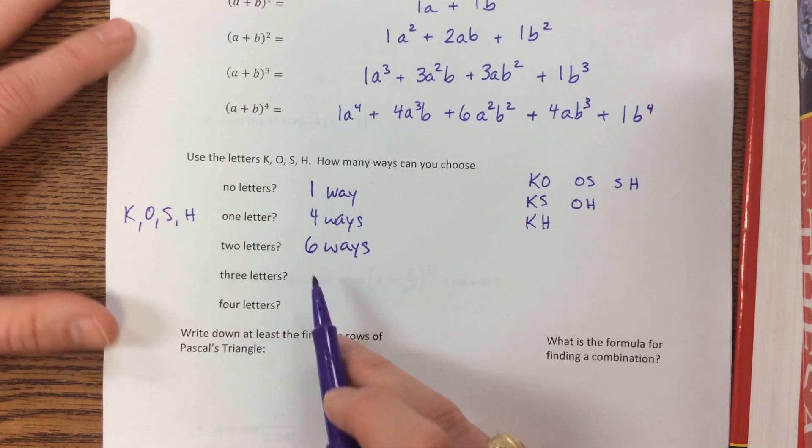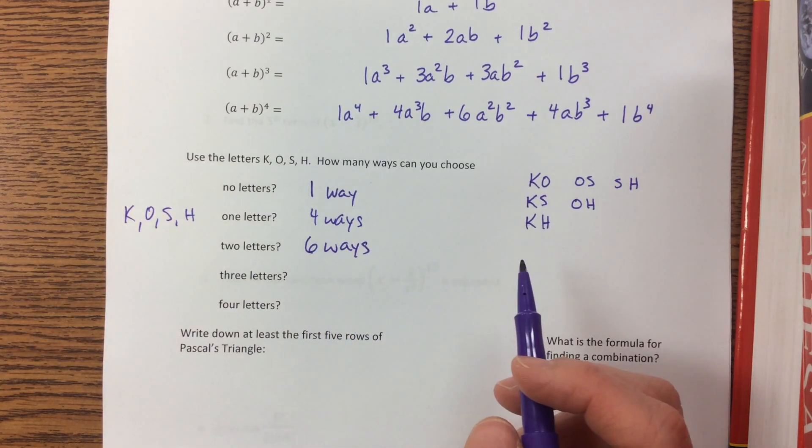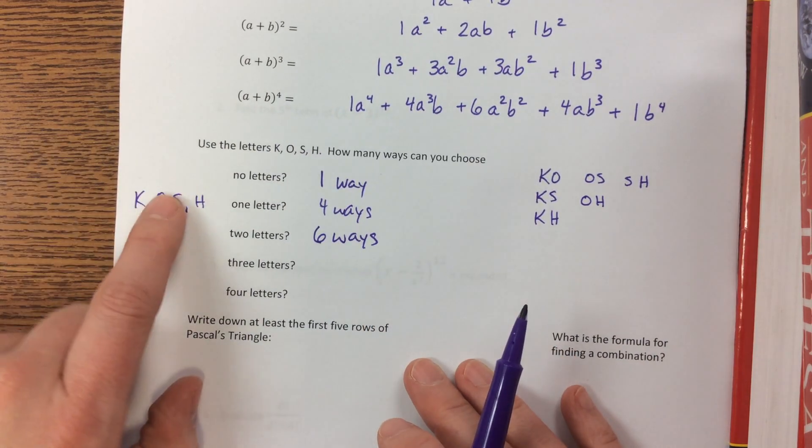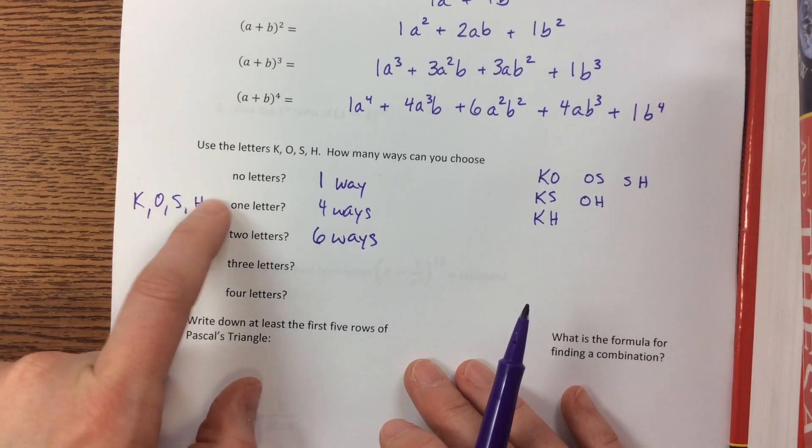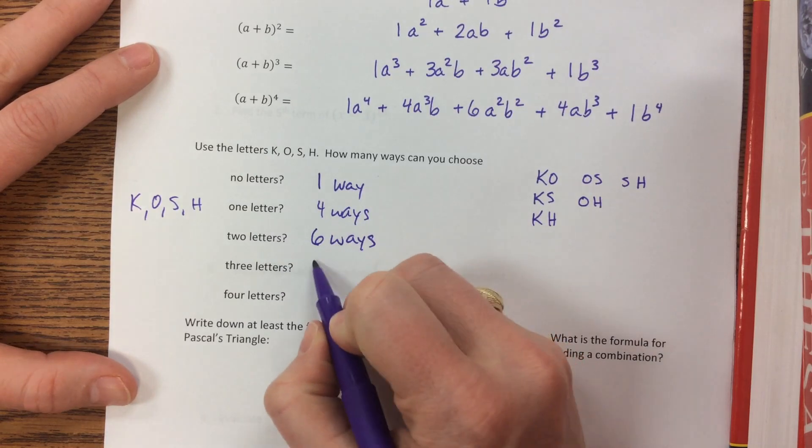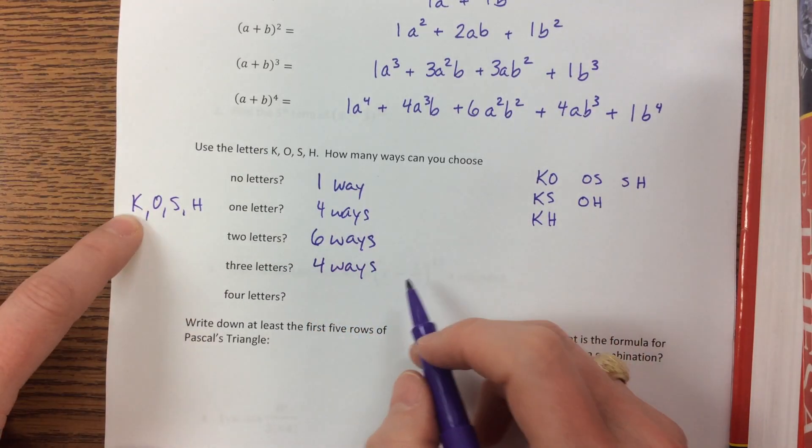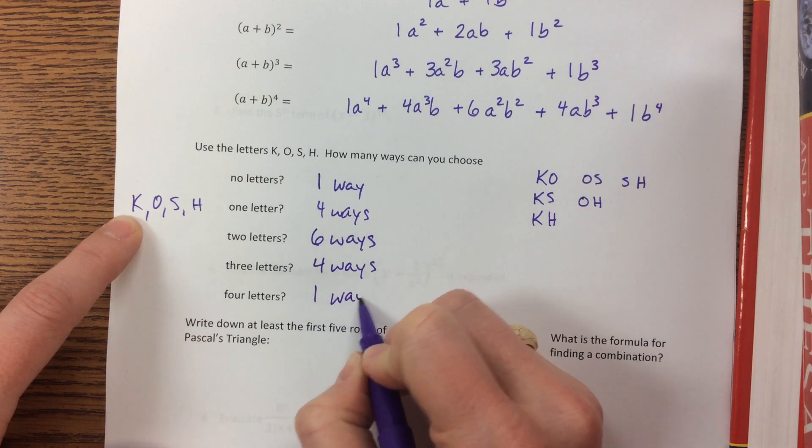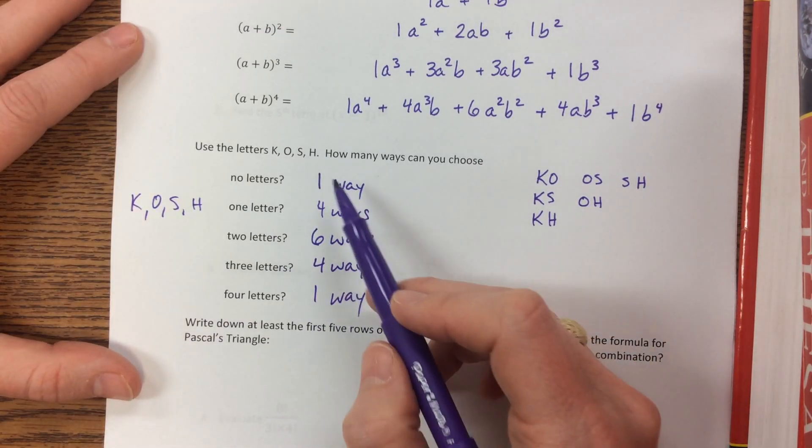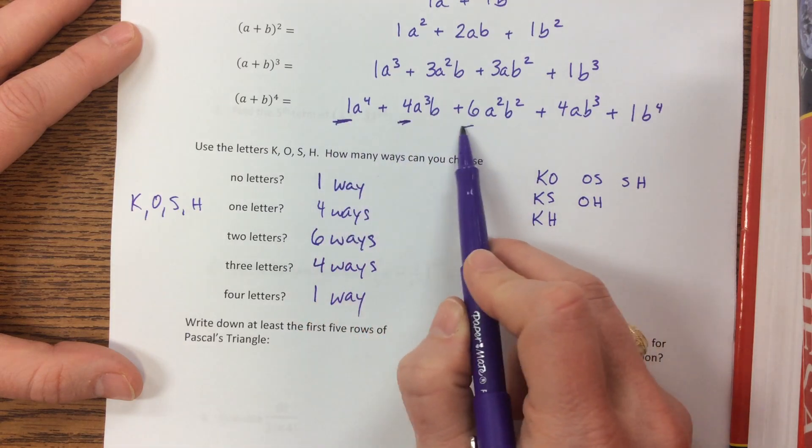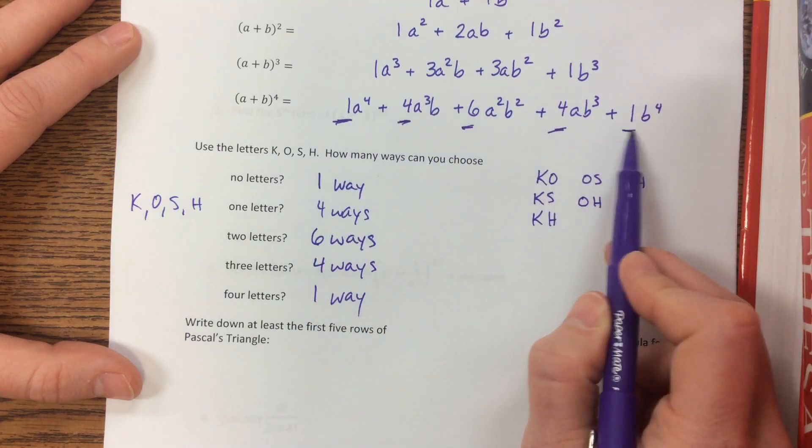Now then how many ways can we pick three letters? Basically that's just omitting one. So I can either omit the K, I could omit the O, I could omit the S, or I could omit the H, and so there's four ways that I could pick three of those letters. How many ways can I pick all four letters? Just one. One, four, six, four, one. Notice this one, four, six, four, one are these coefficients here. One, four, six, four, one.